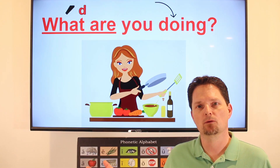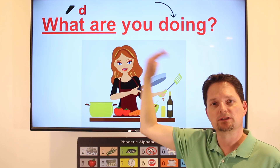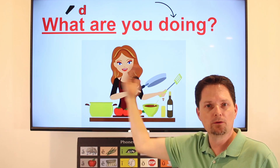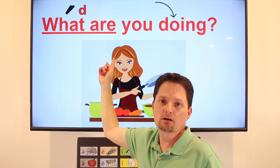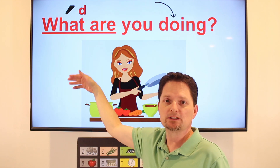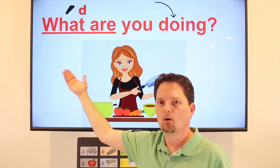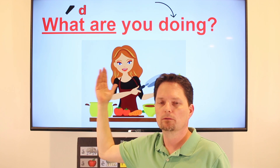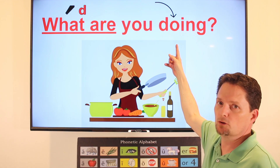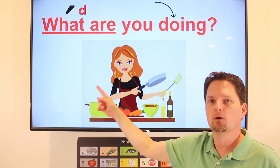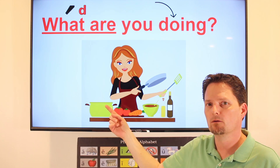Another example of an information question with the question word 'what,' so the intonation goes down. What are you doing? Also, 'what are' — the T is between two vowels, so it changes to a D sound, a fast D sound. What, what — water. What are you doing? What are you doing?